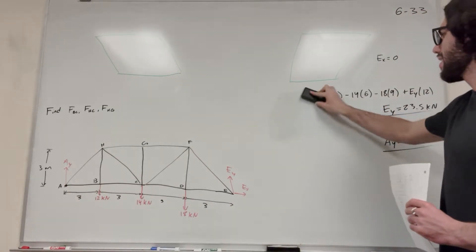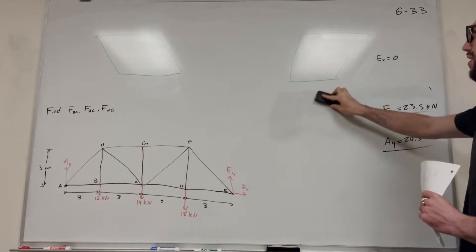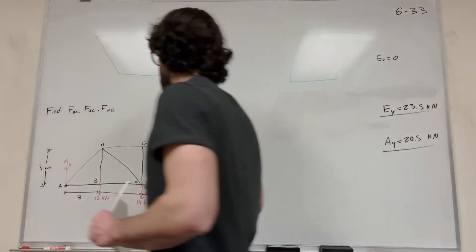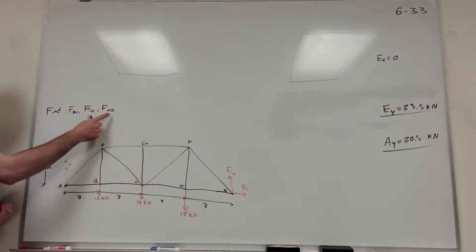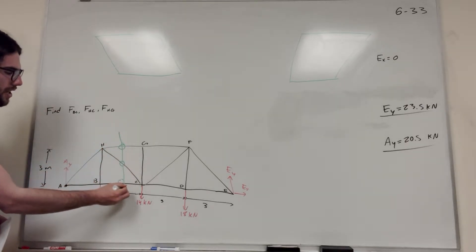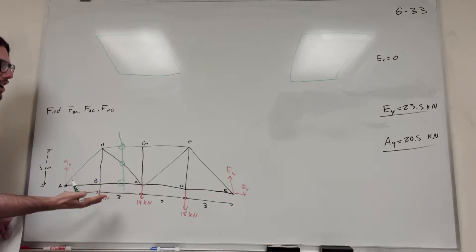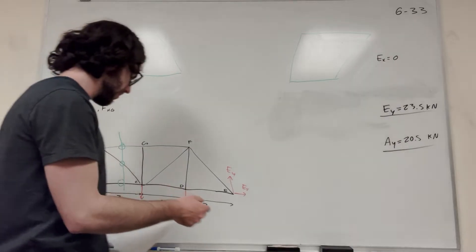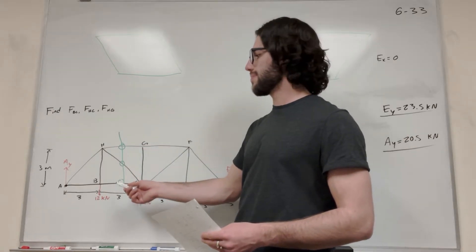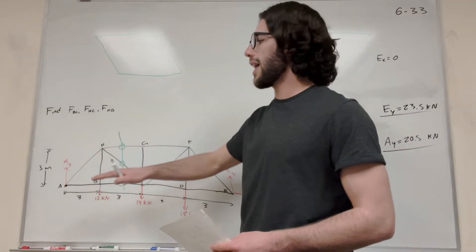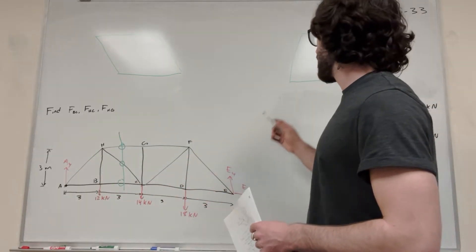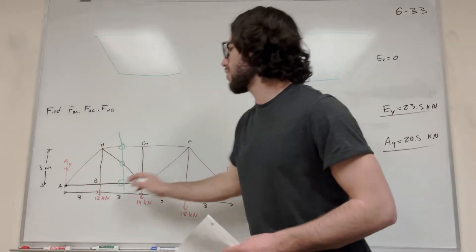Now we could find the force in every member by starting at one side and working our way down, but that's way too much work. Instead, we want to be efficient. We're looking for forces in BC, HC, and HG, so we can make a cut right through all three of them — that's the goal with the method of sections. We'll take the left side since it's shorter, though it doesn't actually make a difference which side you choose.